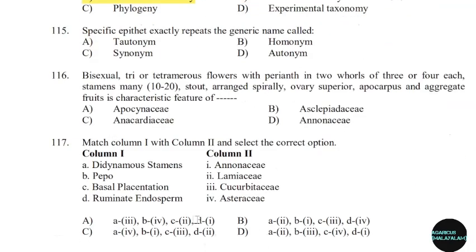115th question: Specific epithet that exactly repeats the generic name. Correct answer: Option A — Tautonymy.